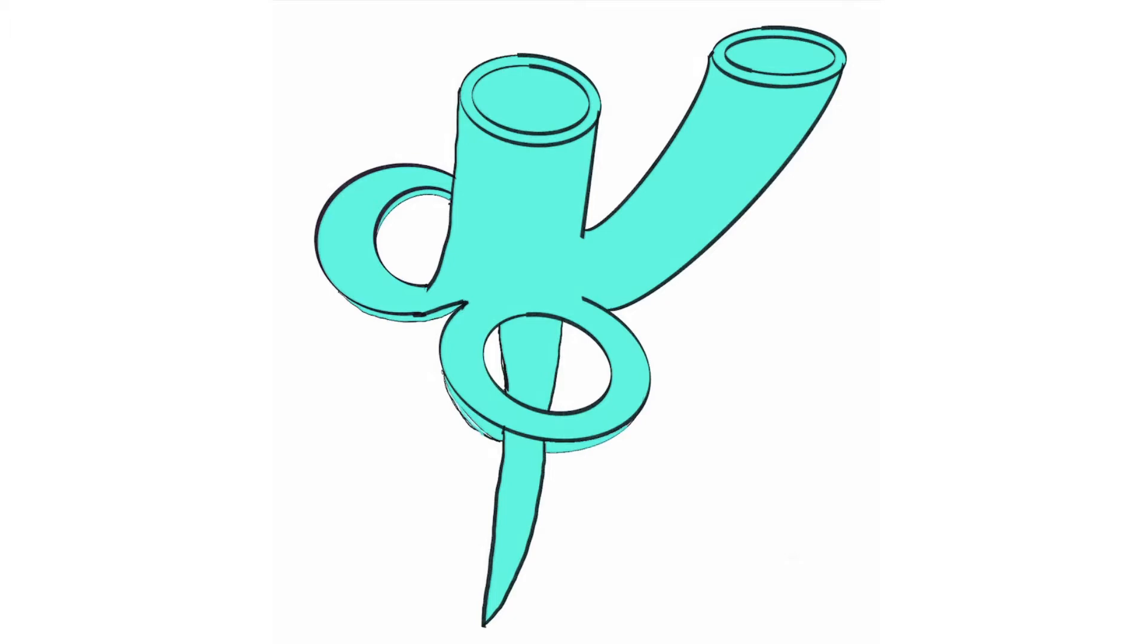So what we're looking at right here is a simplistic image of the fibrous skeleton of the heart, which is composed of dense connective tissue. And it has a number of purposes, one of which is to provide structural integrity to the heart.